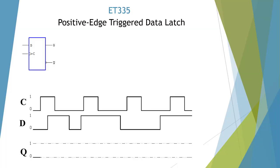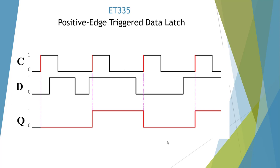We have a positive edge-triggered data latch, so we're looking at the low-to-high transition — the positive edge — and we're only interested at that point. We're low here, we look at it, and it's high at that edge. We look only at that edge — it's low. Looking at this edge — high. And we write out the latch. Here's our CAD answer for the positive edge-triggered latch and it looks good.